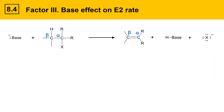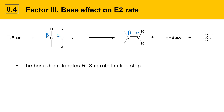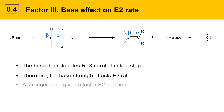The third factor that affects E2 reactions is strength of the base. The base deprotonates the alkyl halide in the rate-limiting step. Therefore, base strength affects E2 reaction rate, and a stronger base gives a faster E2 reaction.